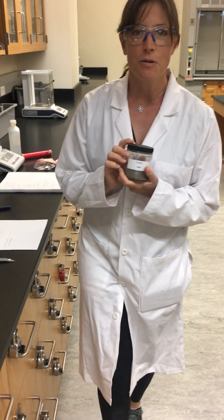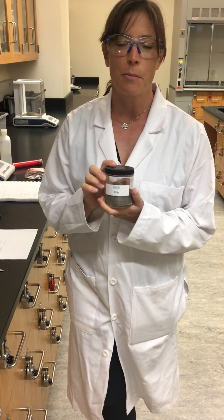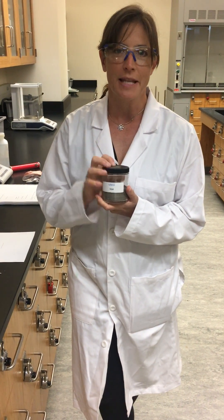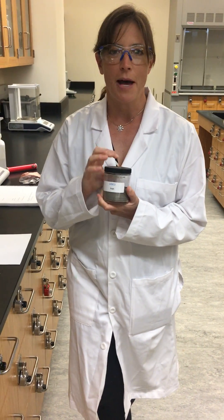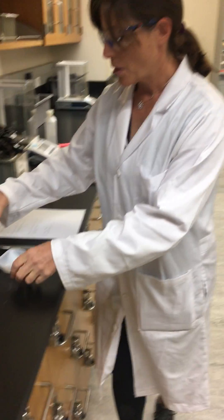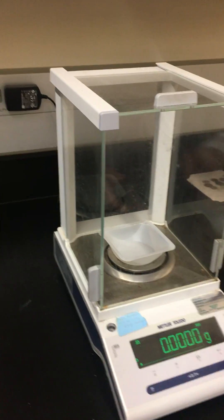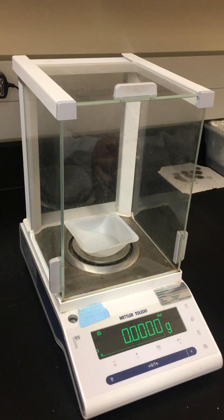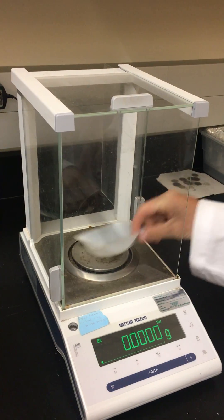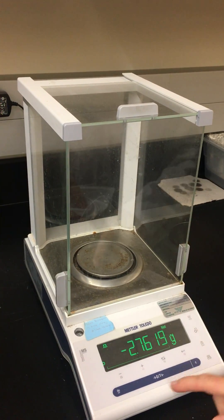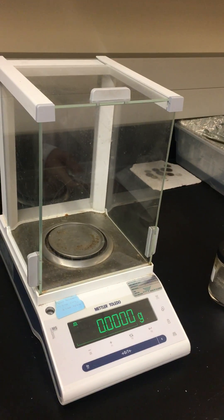So what we're going to do is we're going to try to calculate the number of iron atoms in a given sample of iron. So what we need to do is weigh a mass of iron. And so we're going to start by weighing the mass of our weigh boat. We always have to make sure our balance is zeroed first.